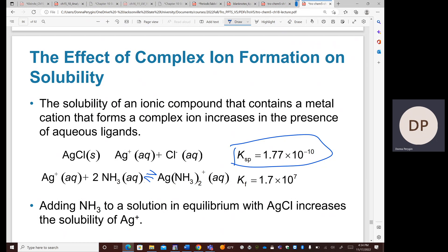The Kf for that process is 1.7 times 10 to the 7. So the formation constant of the ammonia ligand with the silver is very large, 1.7 times 10 to the 7. That's actually pushing the reaction toward the right and increasing the solubility of the silver in solution.